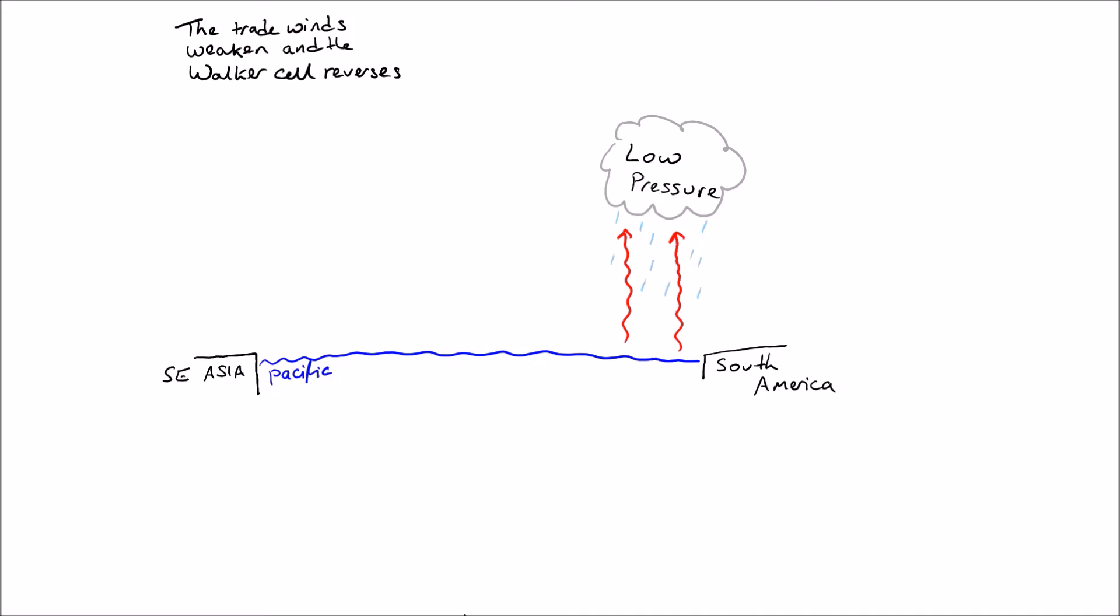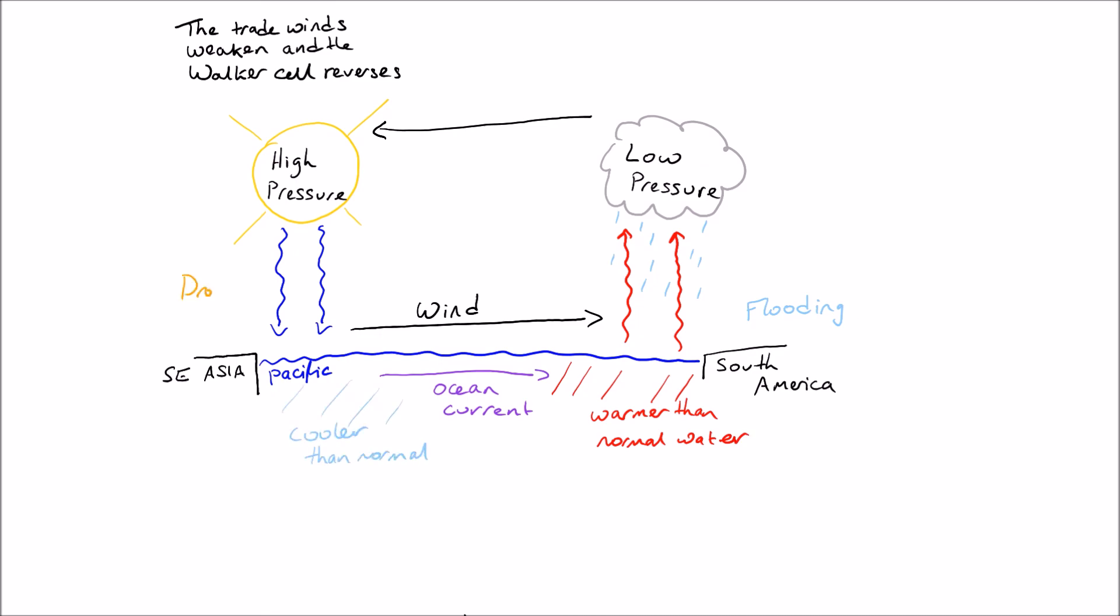In ENSO conditions, on the other hand, the diagram is pretty much the same other than the fact that you are going to be reversing the Walker Cell. This is because the trade winds weaken and obviously the Walker Cell reverses. Low pressure is off South America. It causes flooding. High pressure is off Southeast Asia and it's going to cause the winds to obviously move now from the opposite direction, making warmer than normal conditions in South America and cooler than normal in Southeast Asia and causing drought there.